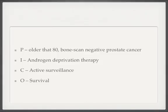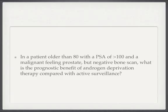So in my case, the patient group I was really thinking about are those older than 80 with bone scan negative prostate cancer. The intervention I was thinking about was androgen deprivation therapy, and what I was comparing it to was active surveillance. Then what I was interested in was how this affected his survival — is starting the androgen deprivation therapy now going to help him to live longer? With those four aspects defined, I can put my clinical question together, and it would look something like this: in a patient older than 80 with a PSA greater than 100 and a malignant feeling prostate but negative bone scan, what's the prognostic benefit of androgen deprivation therapy compared with active surveillance? It's a bit wordy, but I hope you'll agree that this really nails down the question.